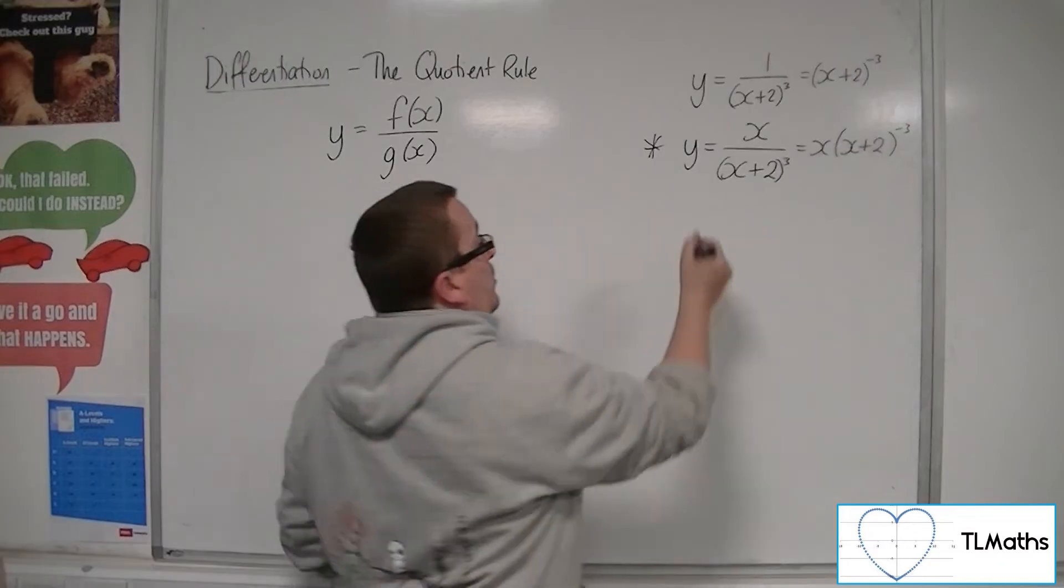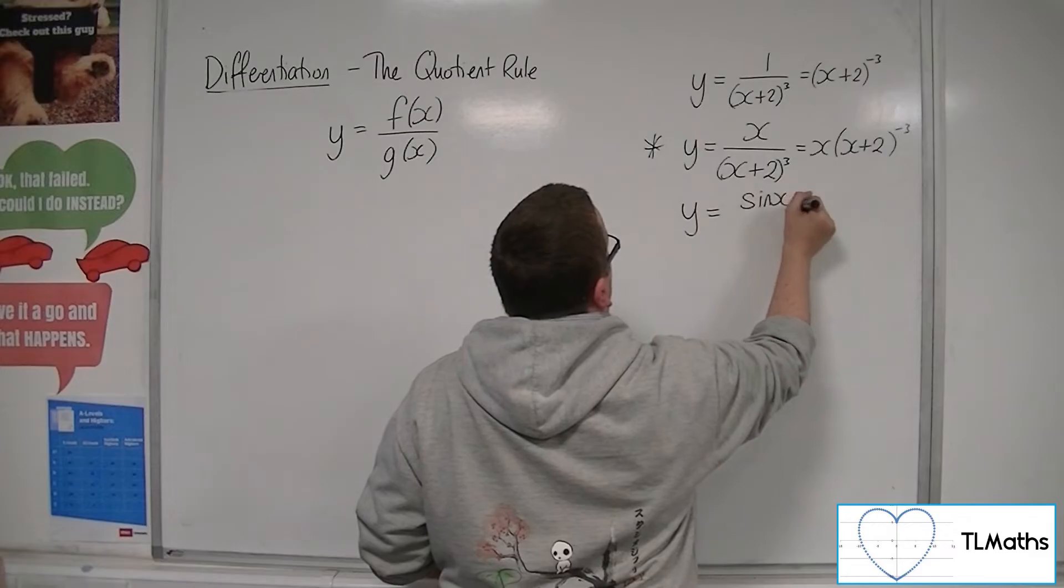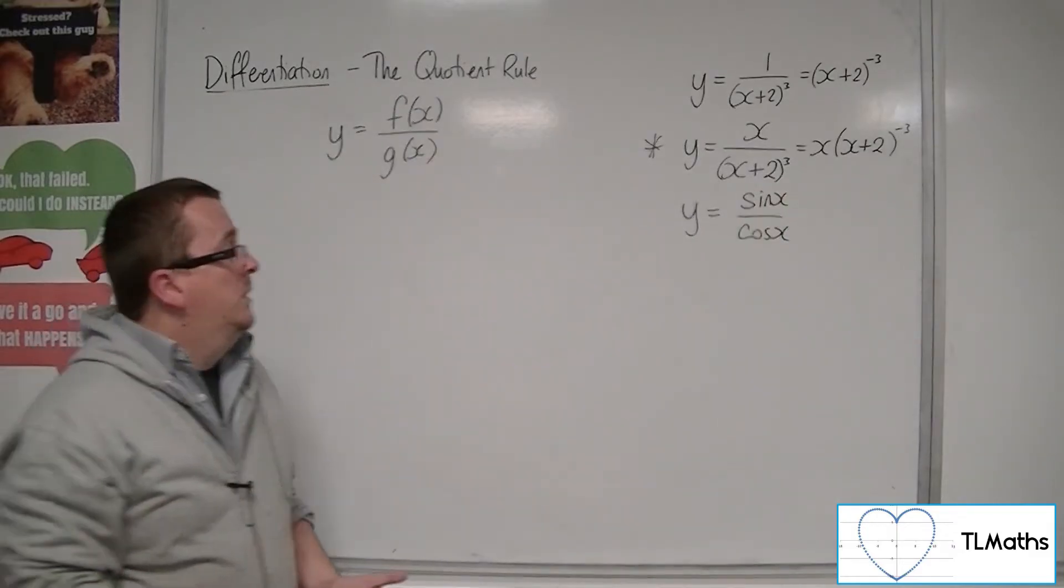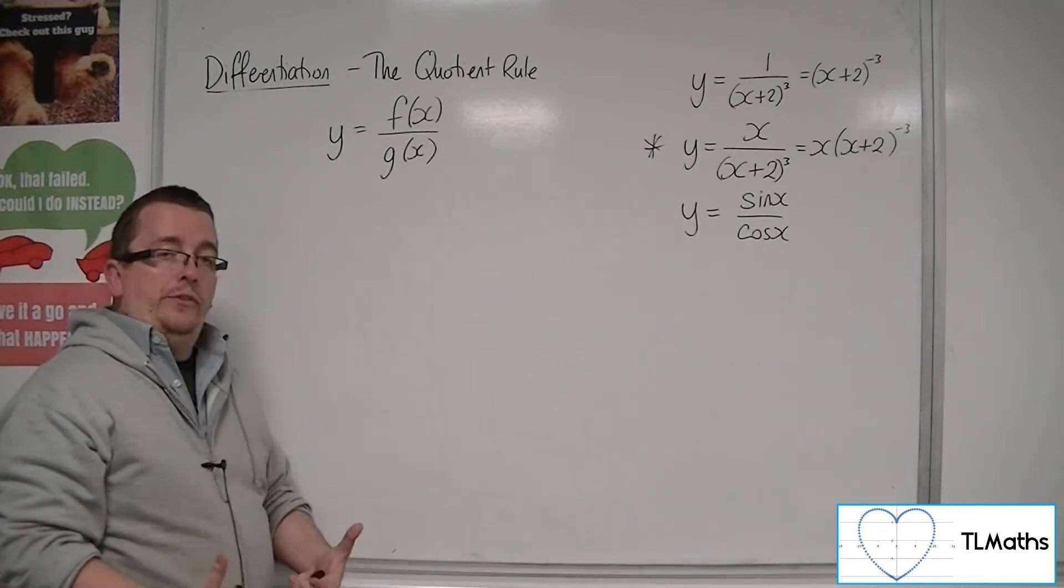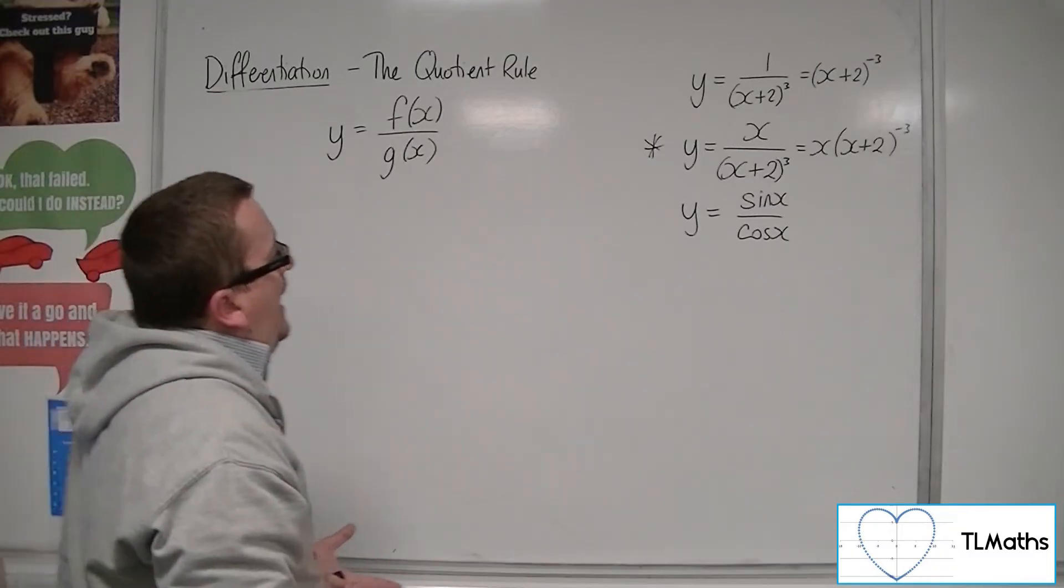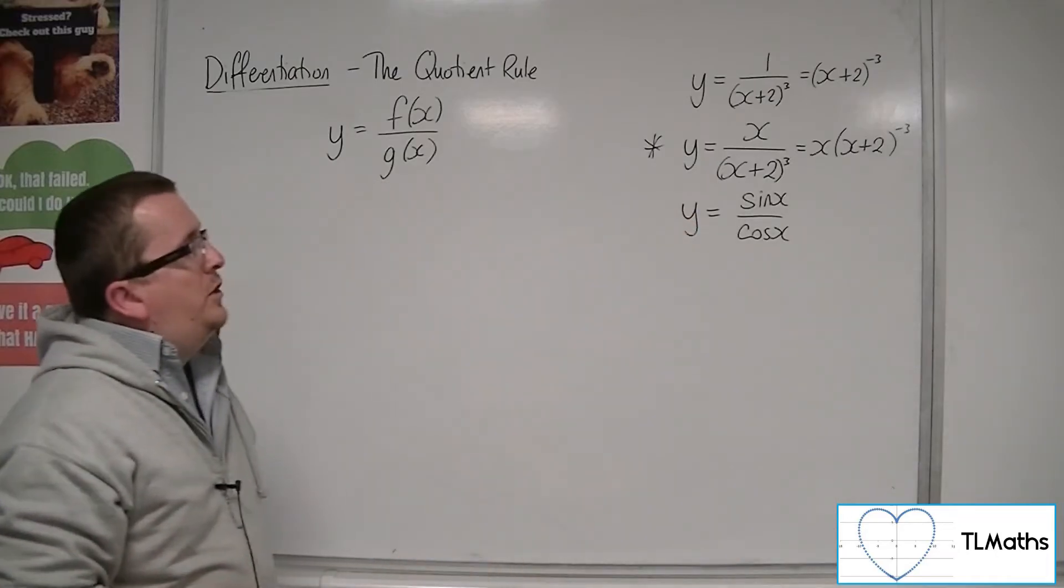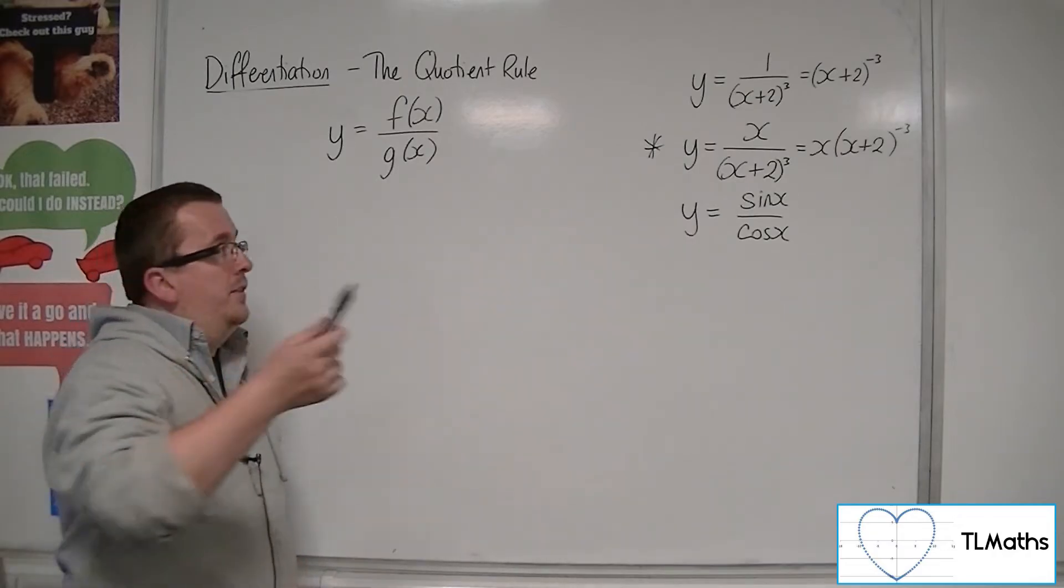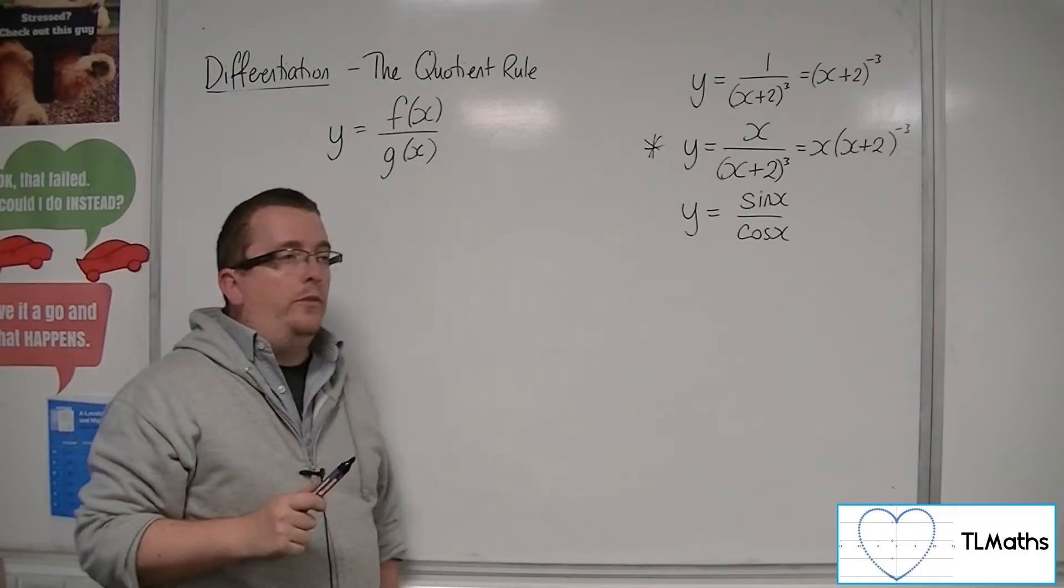Another example might be something like y equals sin(x) over cos(x), to differentiate tan. As long as you have a fraction of functions, you can use the quotient rule. Because of this, you might be thinking that because I could write it on one line, I could always just use the product rule. And the example I'm going to go through, I'm going to try and convince you otherwise.